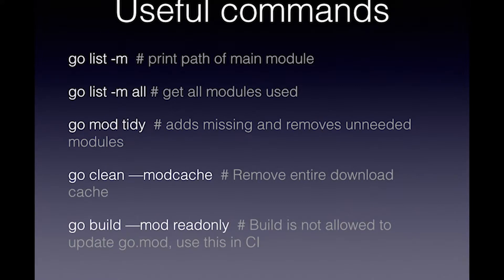Most commands also have a -mod=readonly option. That basically says, for example if you're building, do not change anything in the existing go.mod — and if it would, it's an error. That's something you would use in a CI step where you want to make sure your go.mod is correct against the code you're using, and it can throw an error if that's not the case.